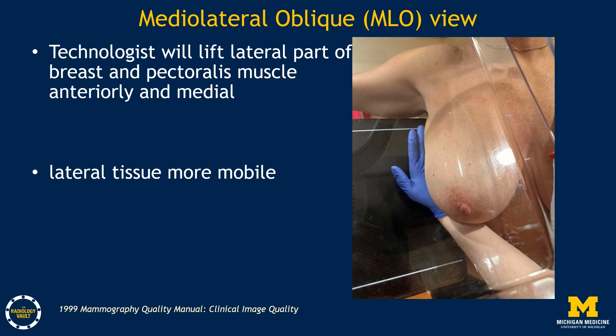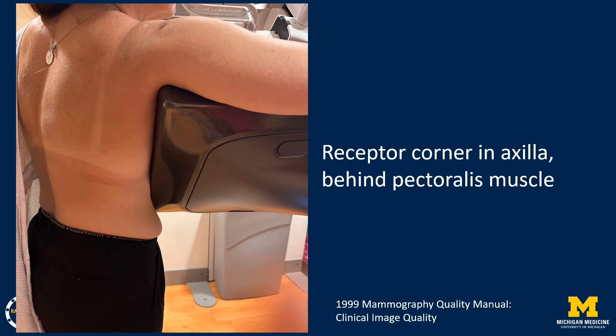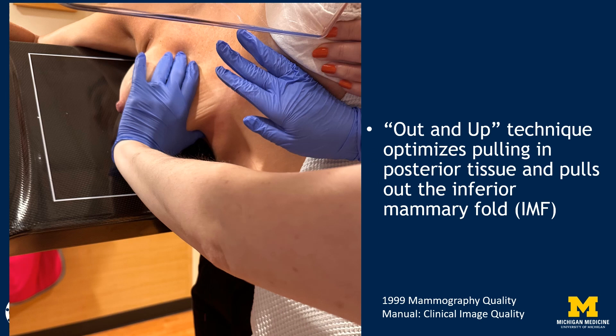The technologist will lift the lateral part of the breast and the pectoralis muscle anteriorly and medially, taking advantage of the fact that the lateral tissue is one of the more mobile parts of the breast. At the same time, the receptor corner will be within the axilla, near the shoulder, behind the pectoralis muscle. As the technologist places the breast on the receptor, she utilizes an out and up technique which optimizes pulling in posterior tissue and pulling out the inferior mammary fold, or IMF, shown by the arrow.